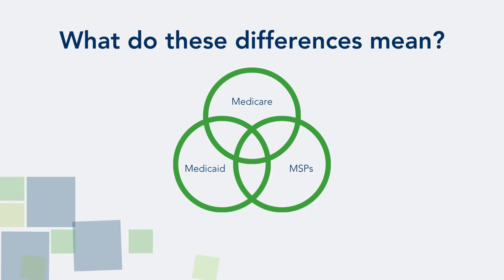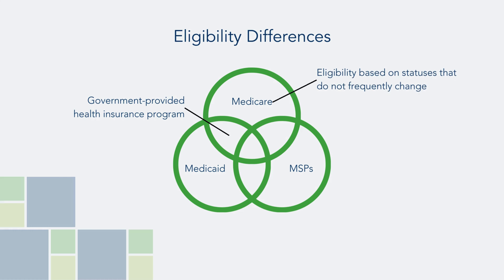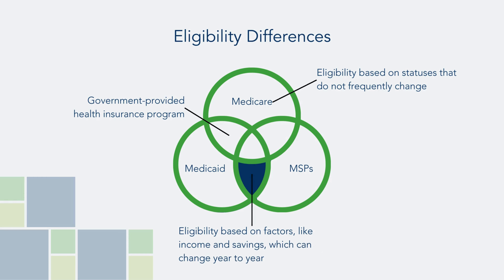What do these differences mean? For one thing, eligibility rules are very different. Medicare's eligibility rules are based on statuses that do not frequently change, and most people who enroll in Medicare keep it for the rest of their life. On the other hand, eligibility requirements for Medicaid and Medicare savings programs are based on factors including a person's income and savings, which can fluctuate from year to year.